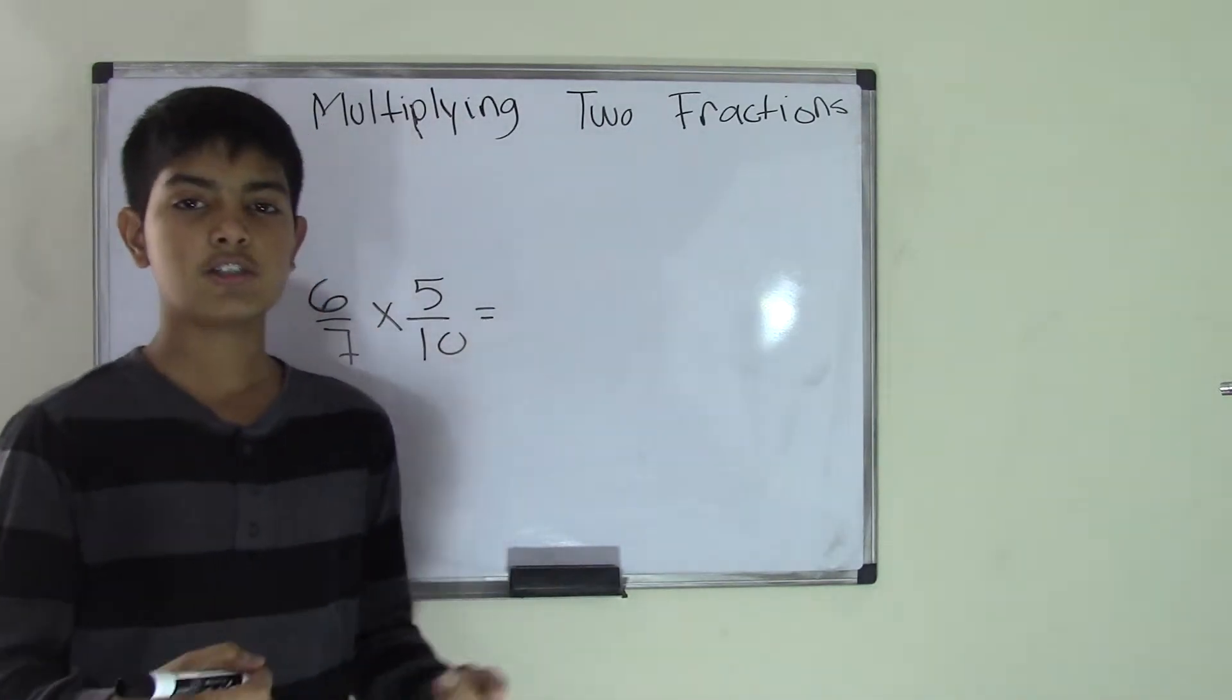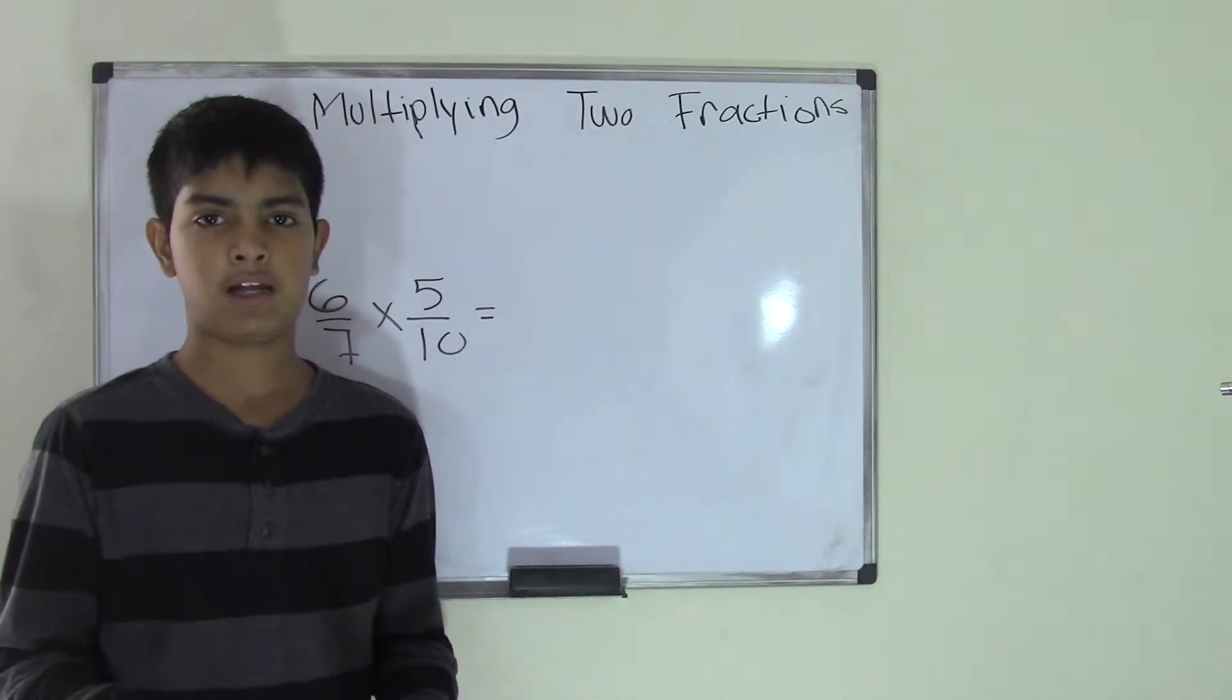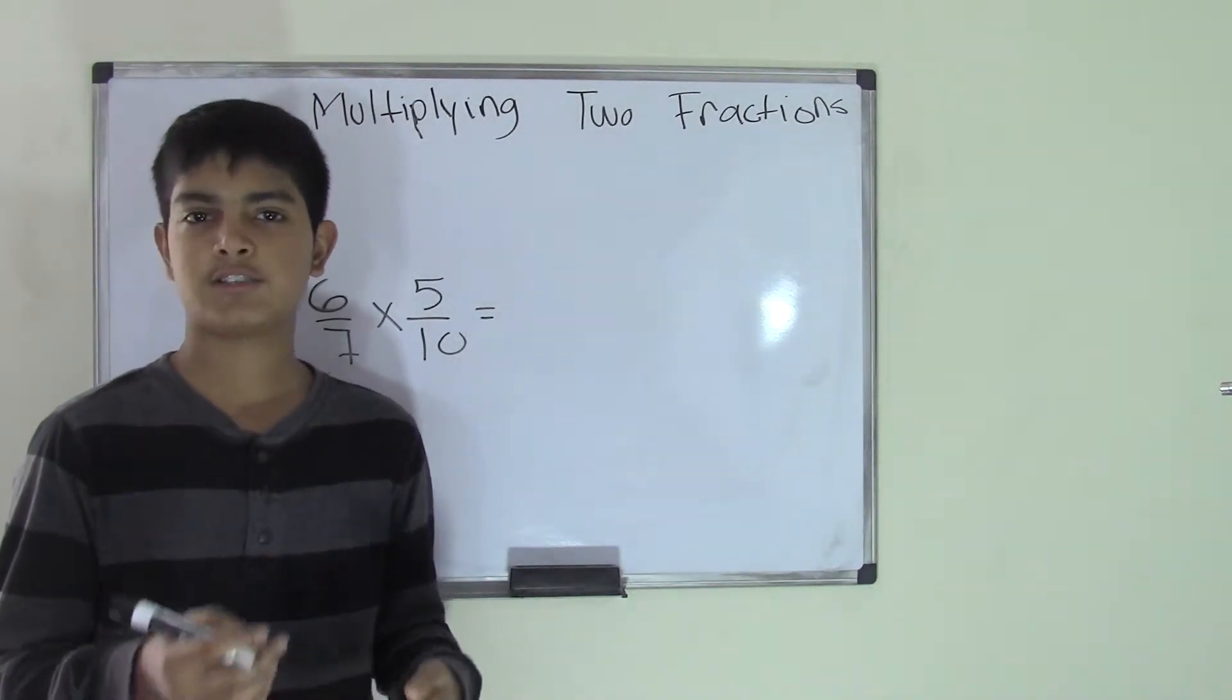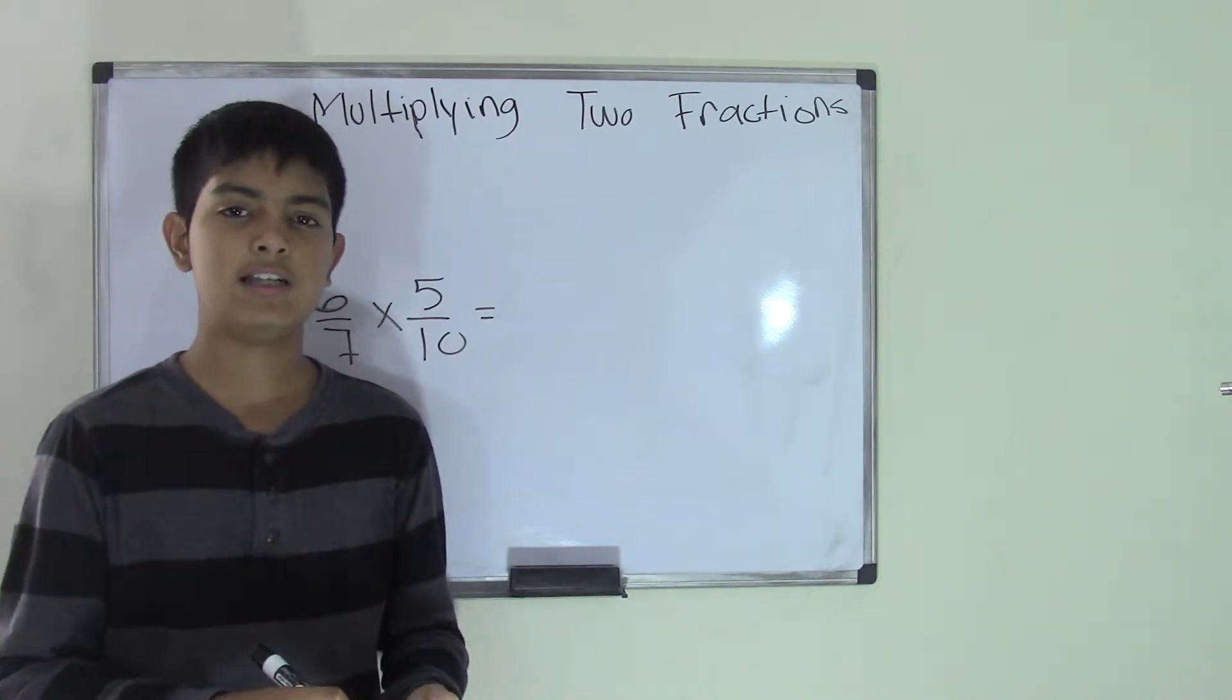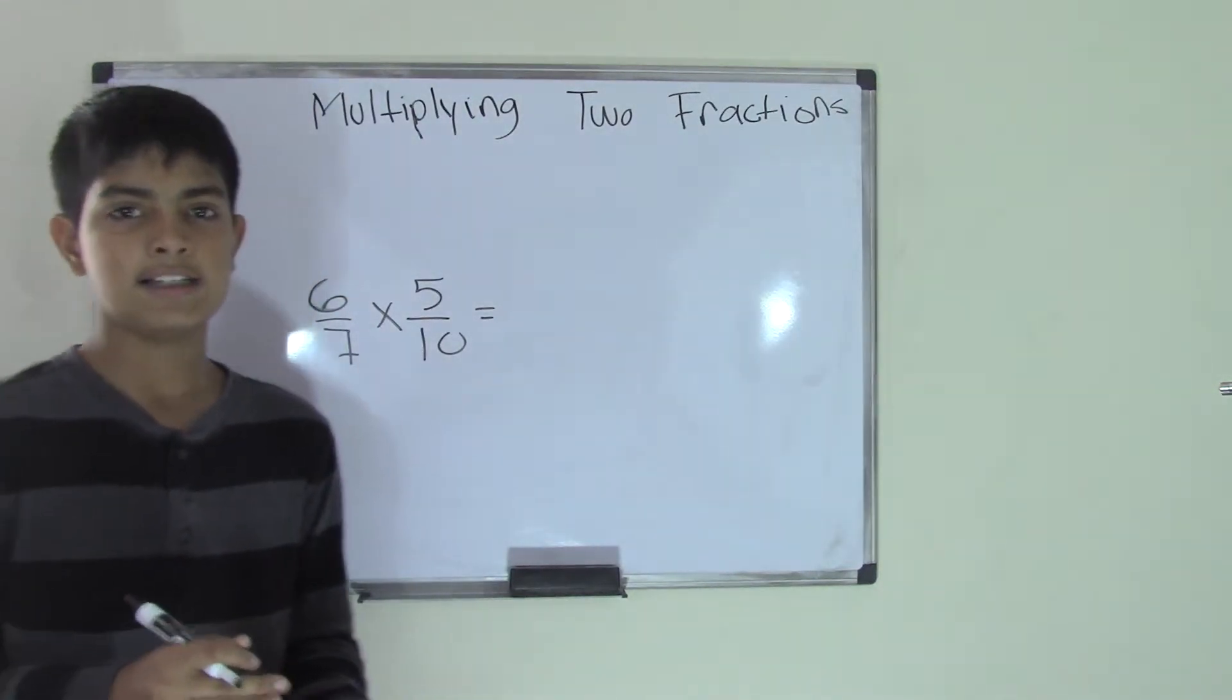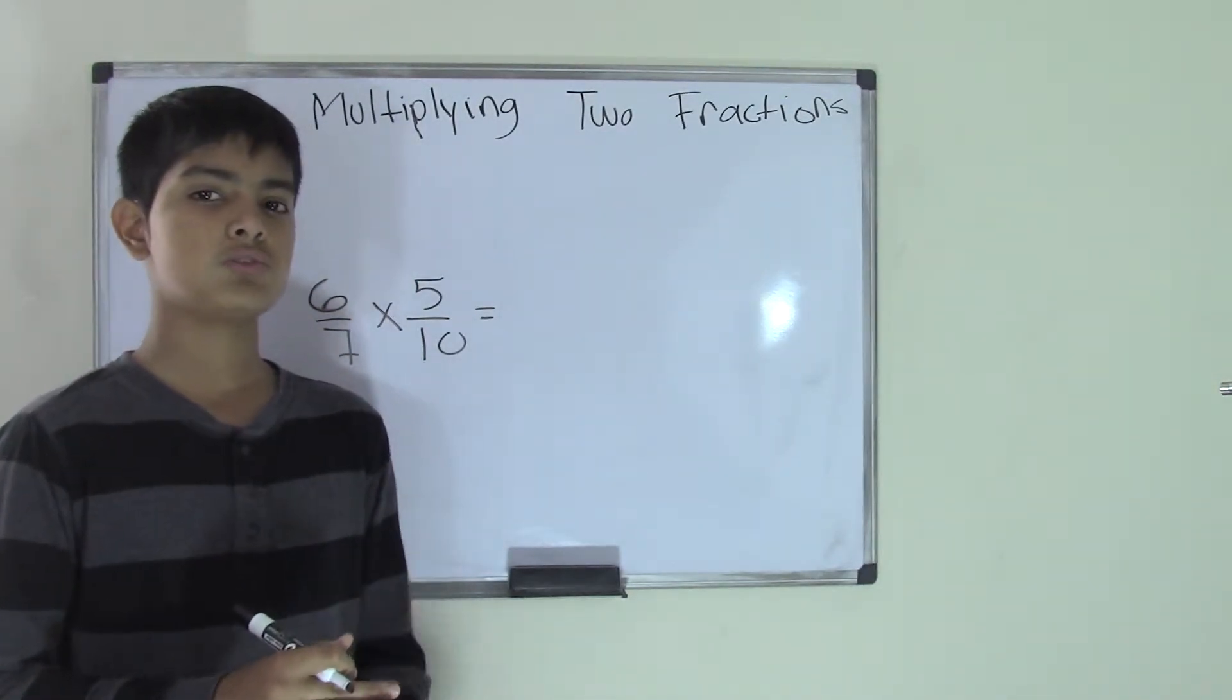Well, the first thing you need to know is that whenever you're multiplying two fractions, you simply multiply. There is no doing anything else. It's a simple multiplication, and that's why this topic is the easiest of all, I guess. This is what I think—that this topic is the easiest of all the things we're going to do.